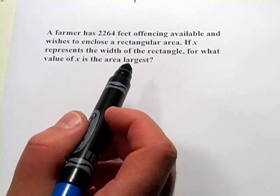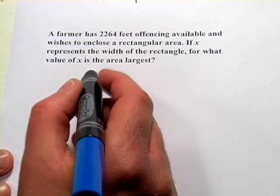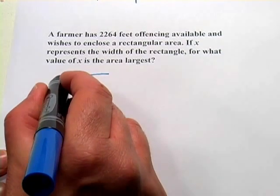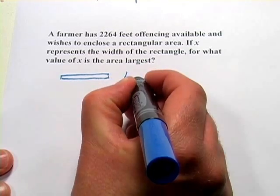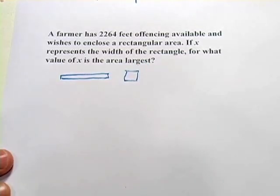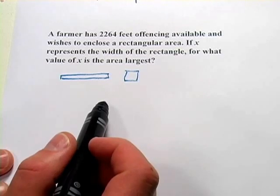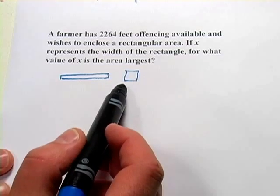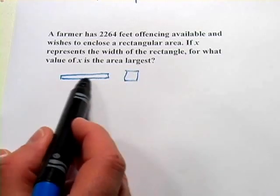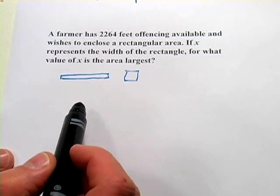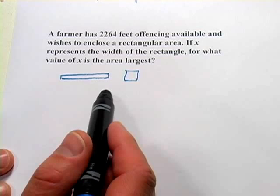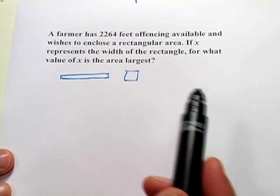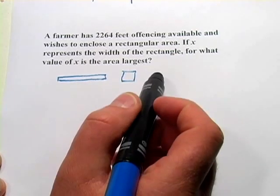This is basically asking, if you think about the extreme kinds of cases you can have, you could have a really long skinny rectangle or you could have something that's a lot more like a square. Those are the two extremes. You can make all the sides as close to equal as possible or very far from each other. The question is which method encloses the most area?